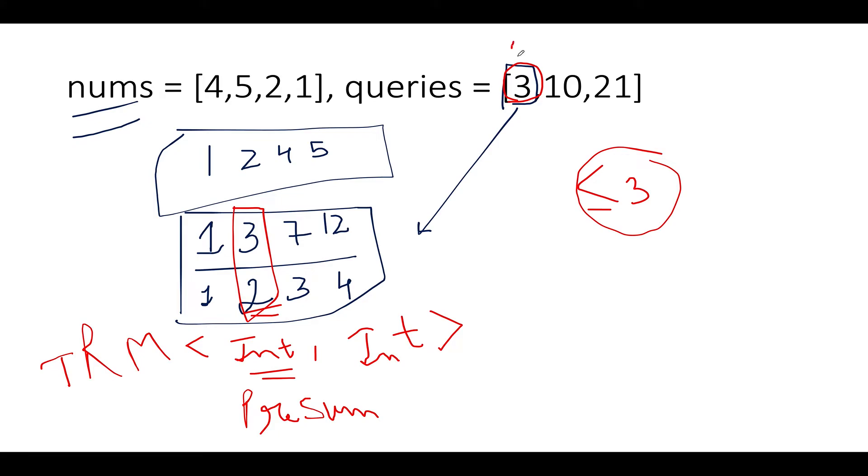The time complexity for floor entry method is log n, which makes it really efficient. The other approach instead of using tree map is to apply binary search, which works equally well. Next entry is 10. We ask the tree map what is the entry less than or equal to 10, which comes out to be 7 comma 3. The corresponding value gives us 3 as the answer.